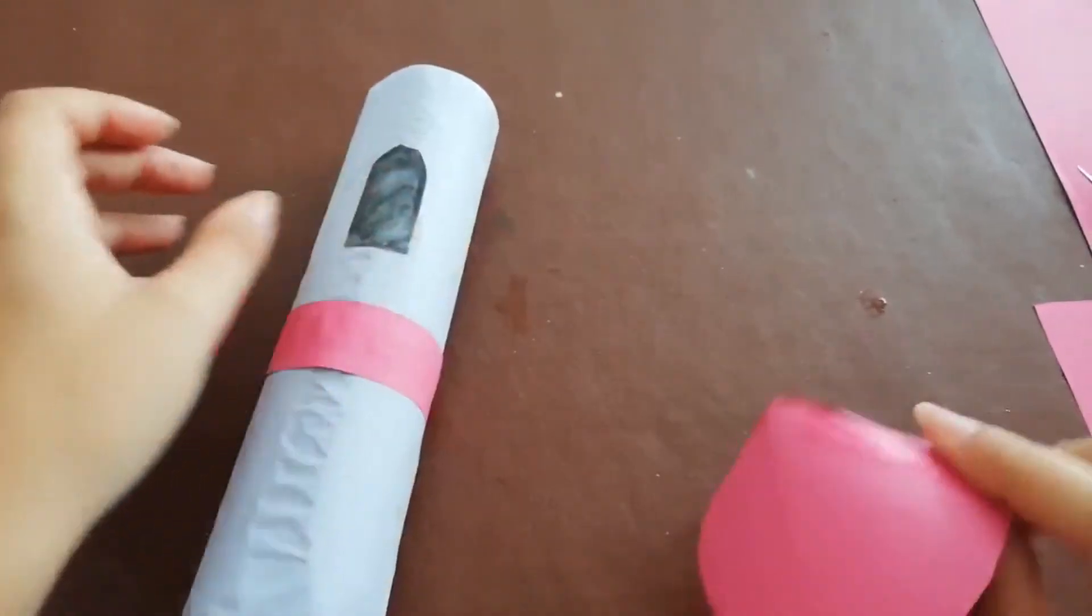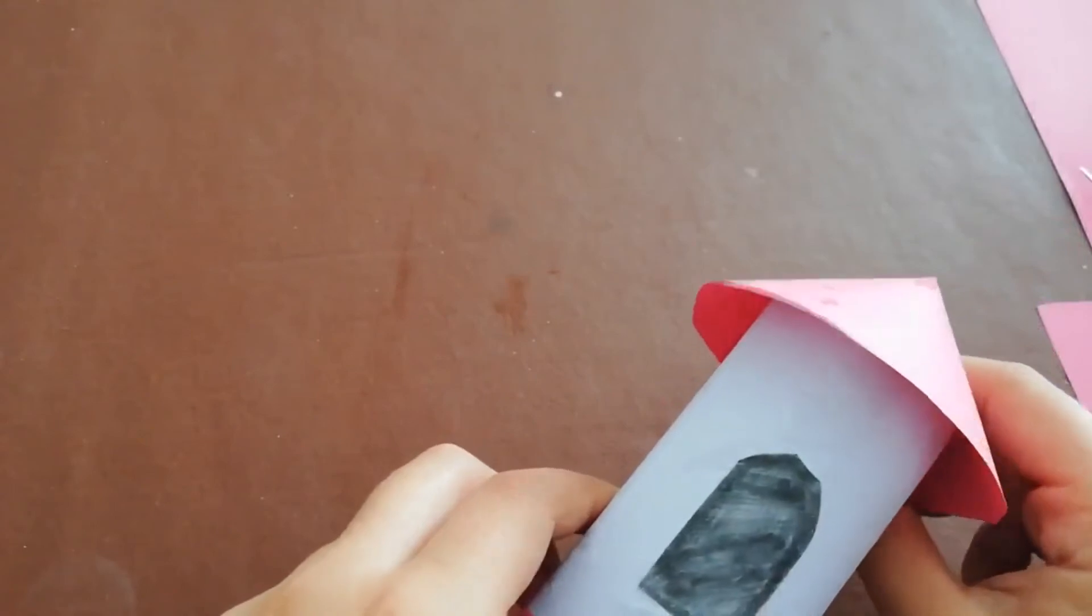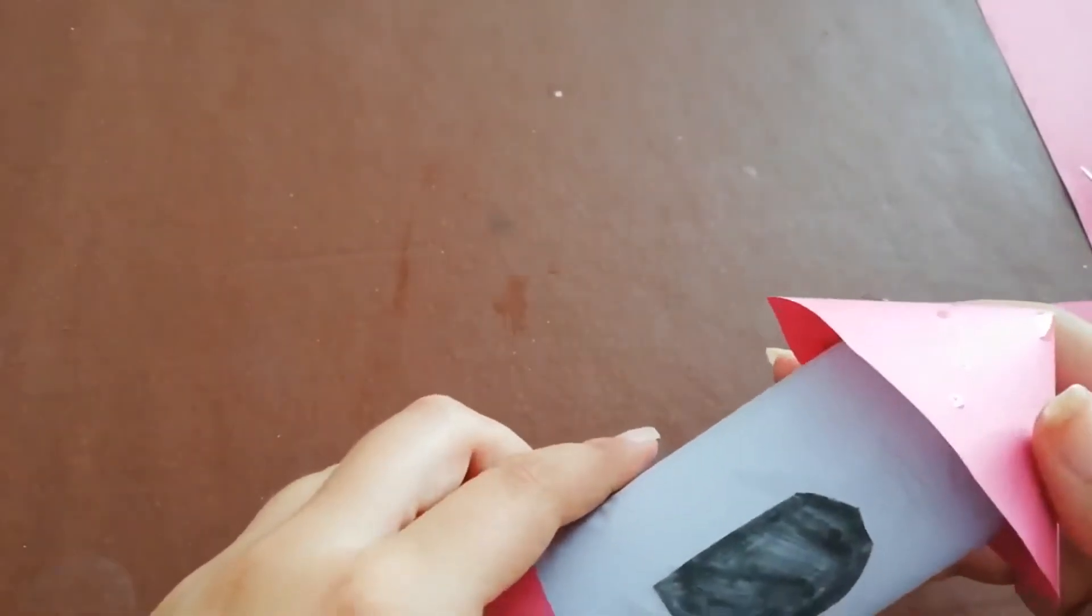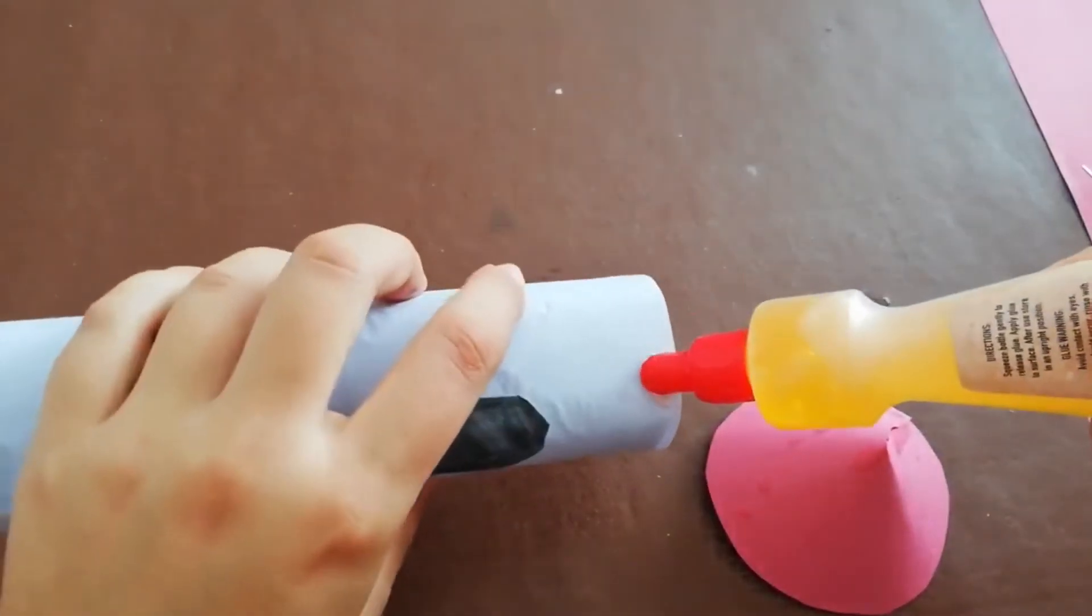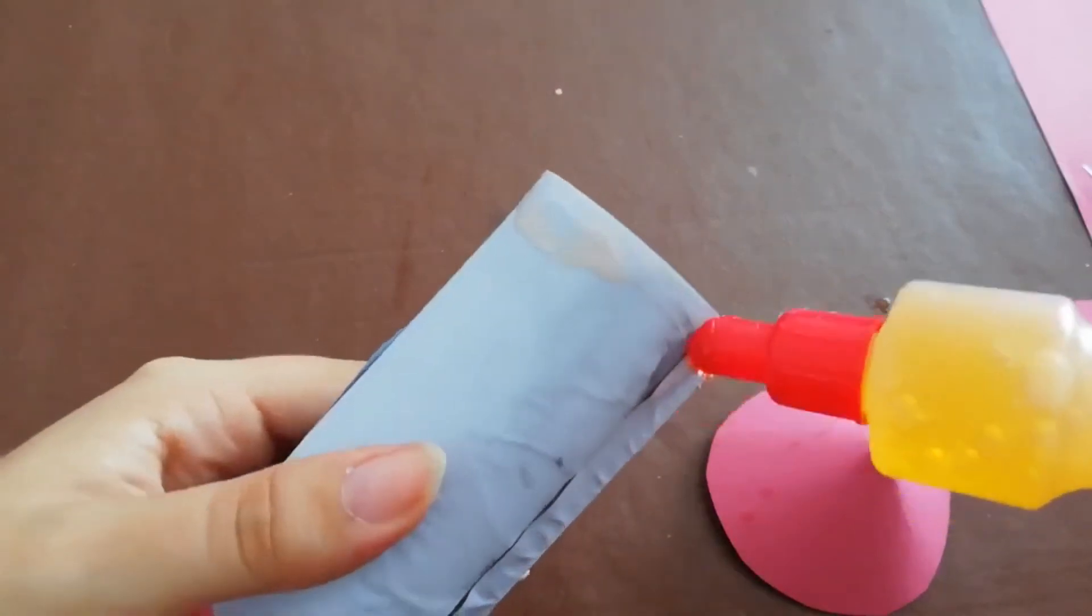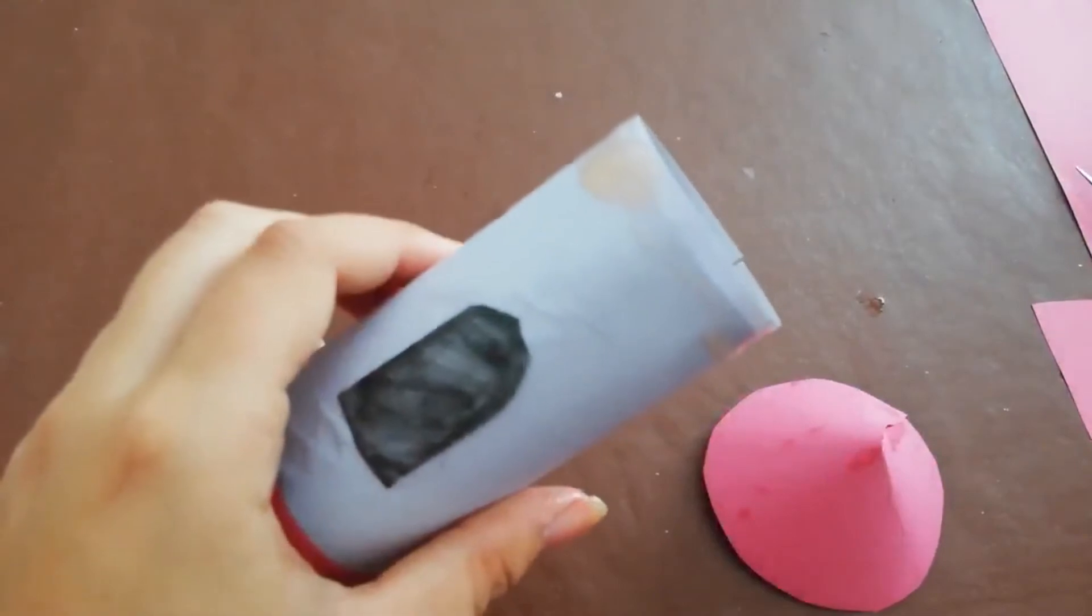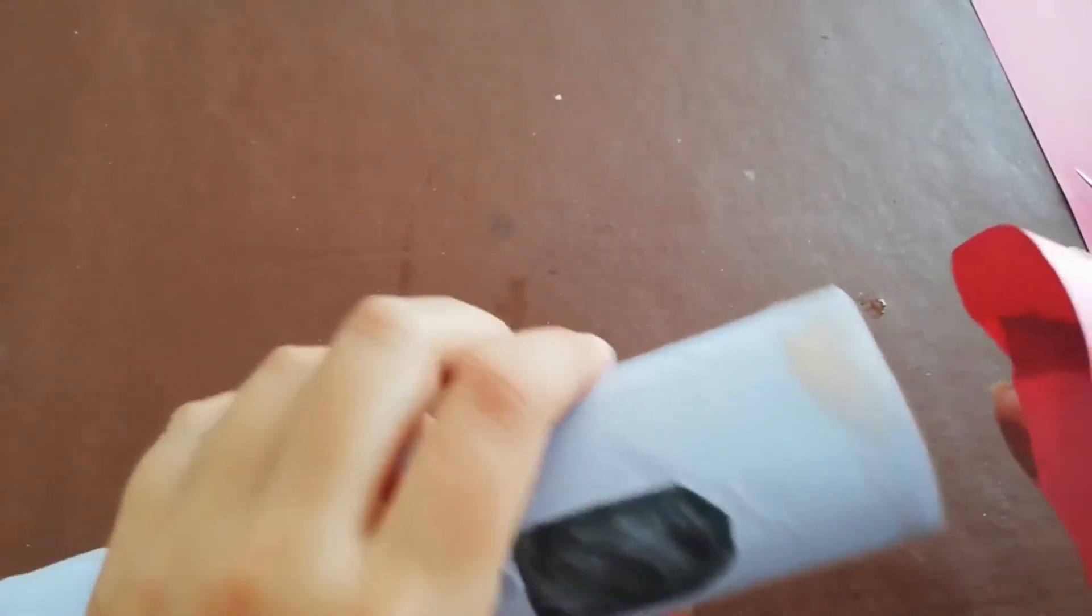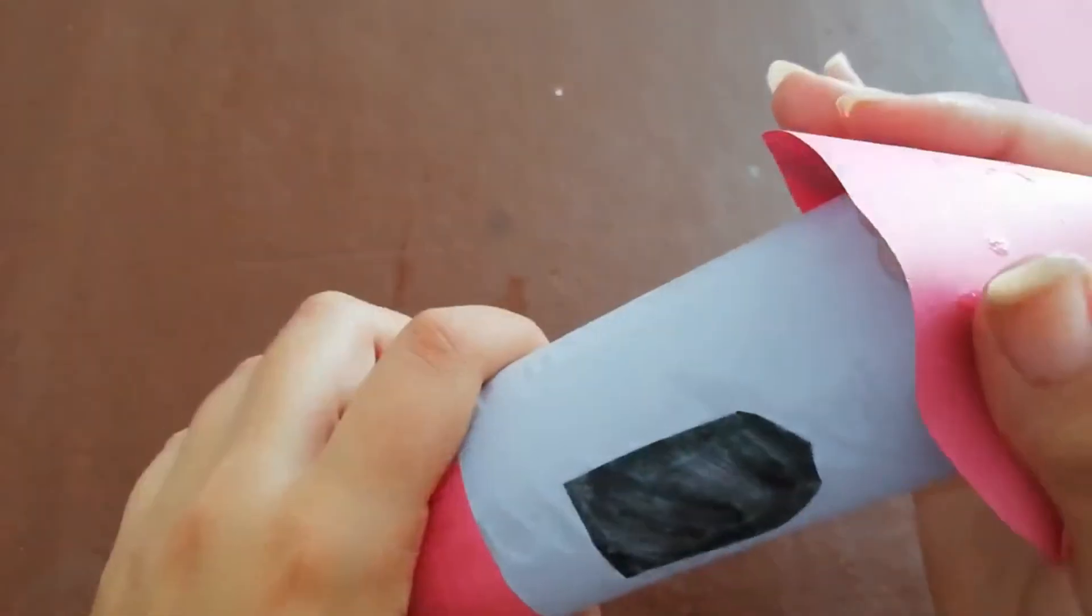And finally, we need to attach this to the top of our kitchen roll. This can be a little bit fiddly, so you might want some help. To do that, I'm going to put some glue around here. Like that. And put it on top. And push it down to make sure it stays. There we go.